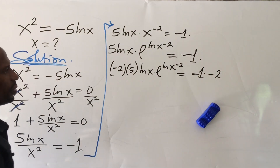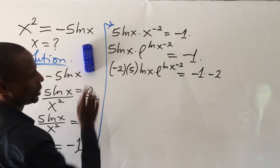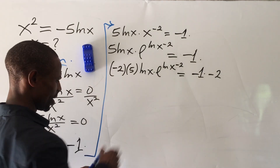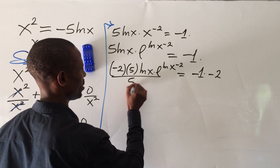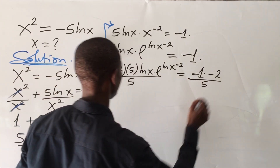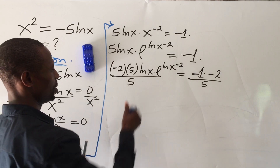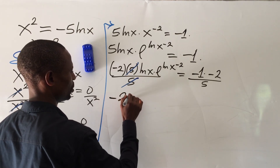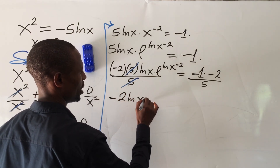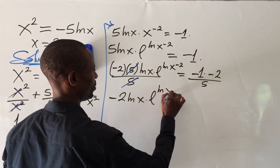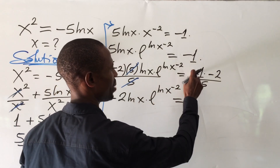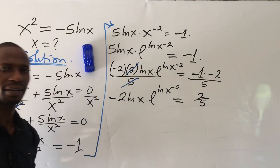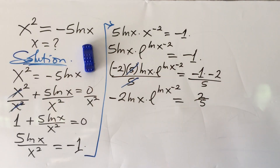Now I want to eliminate this 5, so I divide both sides by 5. That leaves us with minus 2 ln(x) times e to the power of ln(x) to the power of minus 2, equal to minus 1 times minus 2 over 5, which gives us 2 over 5.